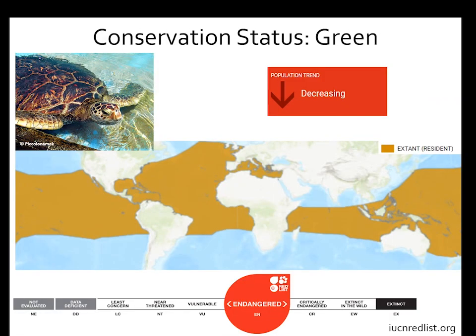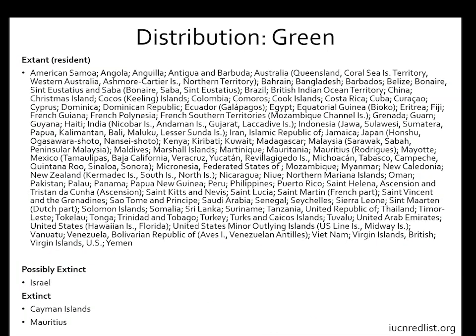Green sea turtles are classified as Endangered, also with a decreasing population trend. They have a smaller range compared to loggerheads or leatherbacks — in the southern hemisphere their range doesn't extend as far toward the poles, staying closer to the equator. They can be found in many countries but not the UK. Some extinctions have already occurred, including from the Cayman Islands and Mauritius according to the IUCN.